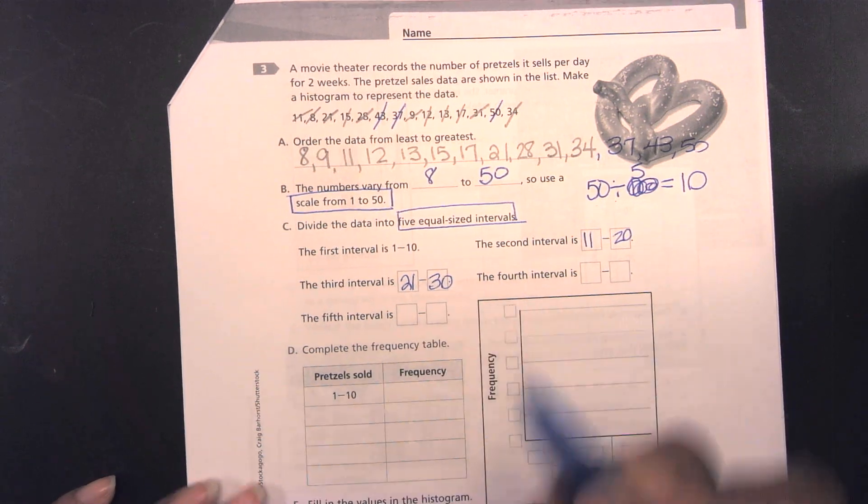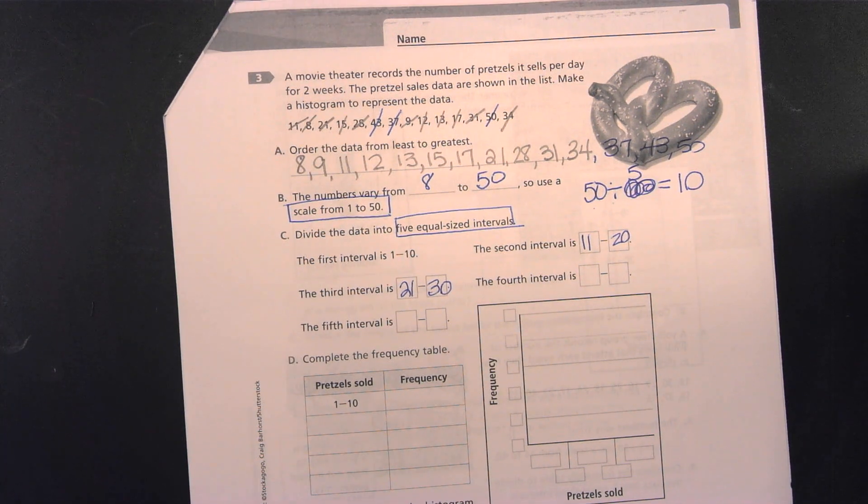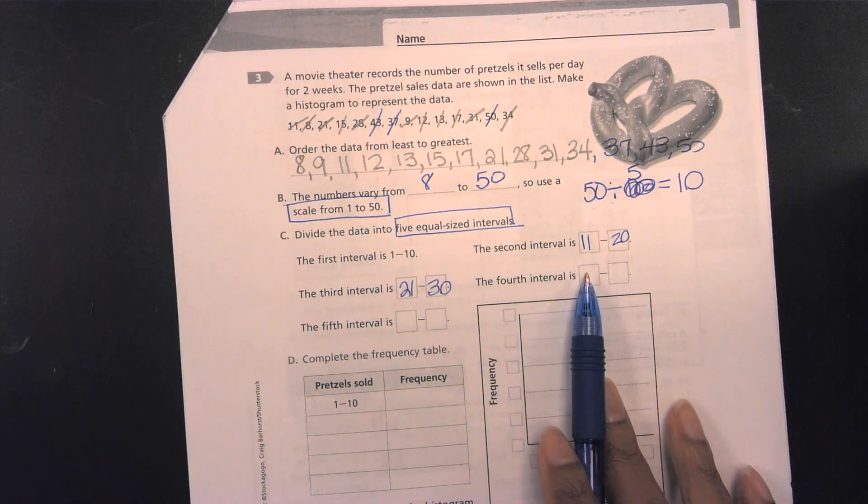It's not going to be 31 because, like I said on yesterday, you have to include the very first number. And I think Ms. Morris said that on yesterday as well. You have to include the first number. So, it will be 21, 22, 23, 24, 25, 26, 27, 28, 29, 30 because every interval has to have the same number. Not the same number, the same amount of numbers. So, again, all of these must have 10.